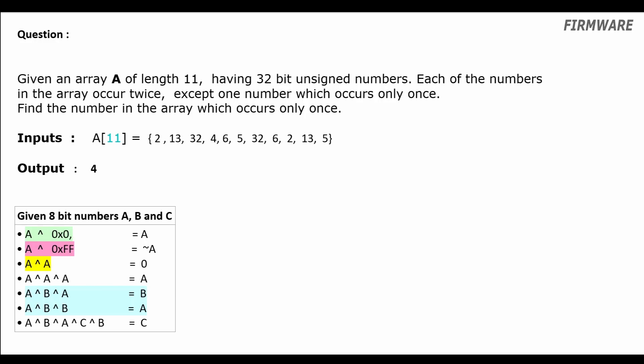Hey guys, here we're going to solve another common array-based XOR question. The question is: we have an array of length 11 where every element occurs twice except one element which occurs only once, and we need to find that element. If you are unfamiliar with XOR concepts, please refer to the video shown in the top right corner. If you want to try this question yourself, please pause the video and code it.